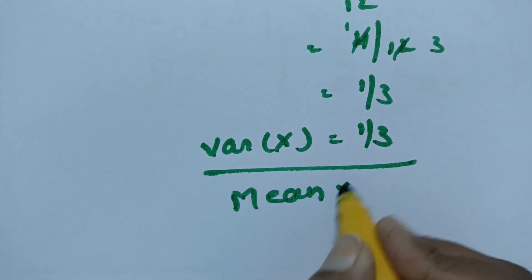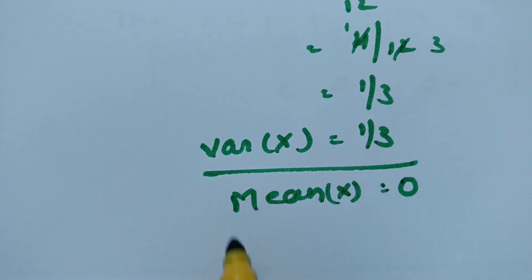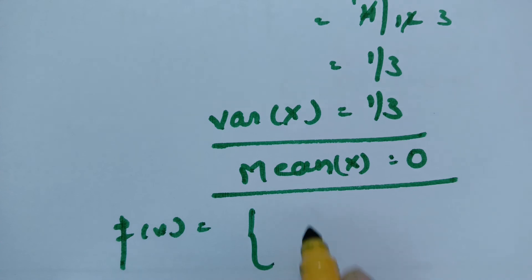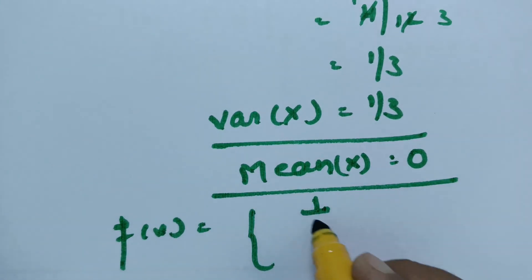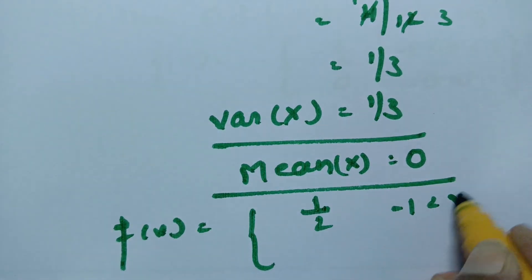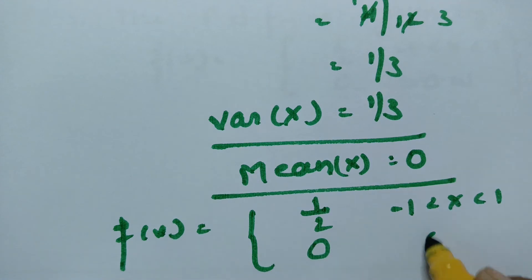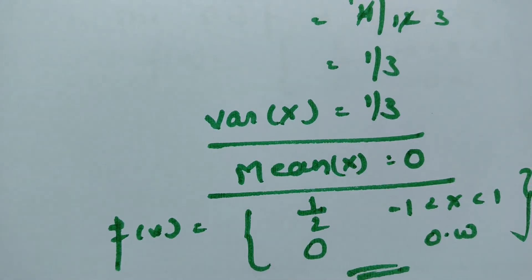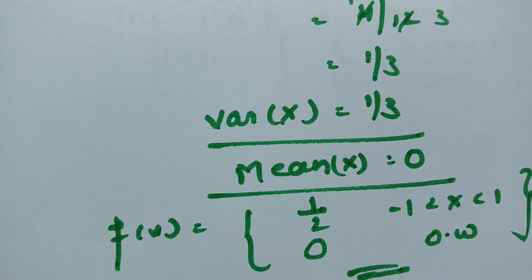So the mean of x is equal to 0, and the probability density function is 1 by 2 for minus 1 less than x less than 1, and 0 otherwise. This is how we solve this problem. Thank you so much for watching. In my next video I will be uploading about hypergeometric distribution — have a look at those videos, they will be very helpful. Pass it on to your friends and practice well. Thank you so much.